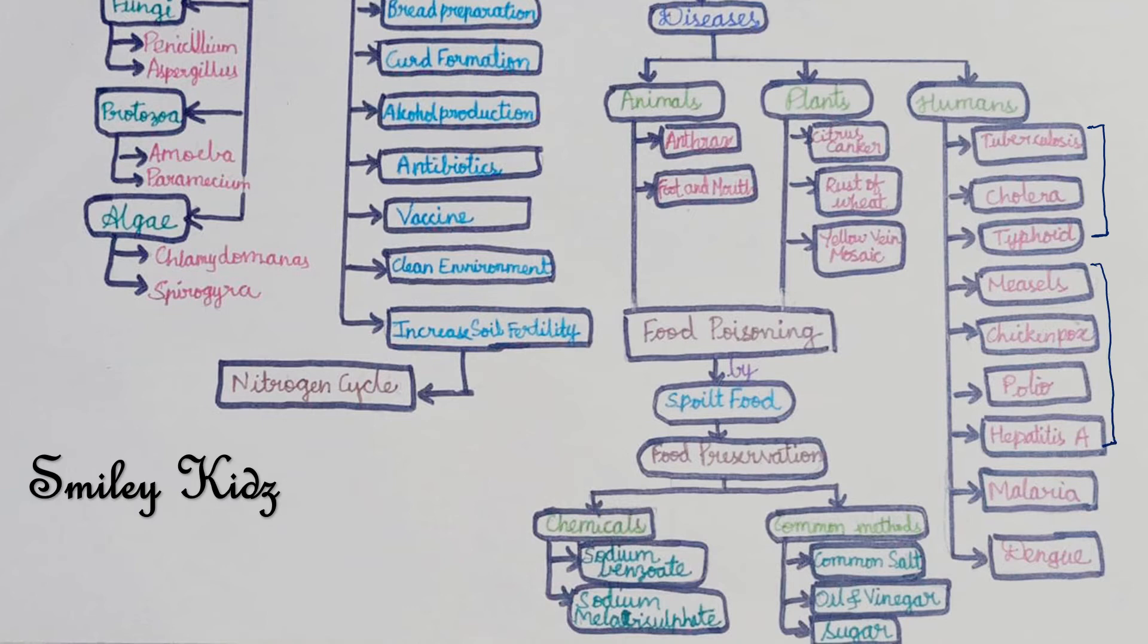Next we have malaria and dengue which are caused by protozoa. Now let's talk about food poisoning. Food poisoning is caused when we eat spoiled food. Do you know how the food is getting spoiled? It is due to harmful microorganisms. Hence we need to preserve food.